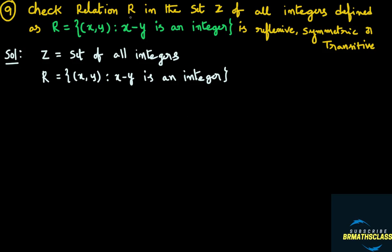In this class, we'll check whether the given relation is reflexive, symmetric, or transitive. What is given: R is a relation on the set of all integers, and the relation R is defined as containing an ordered pair (x, y) such that x minus y is an integer.